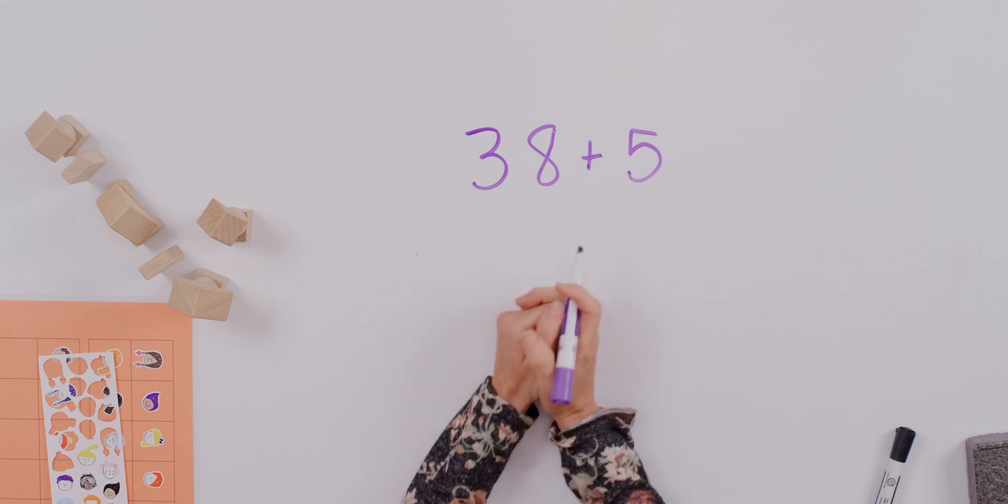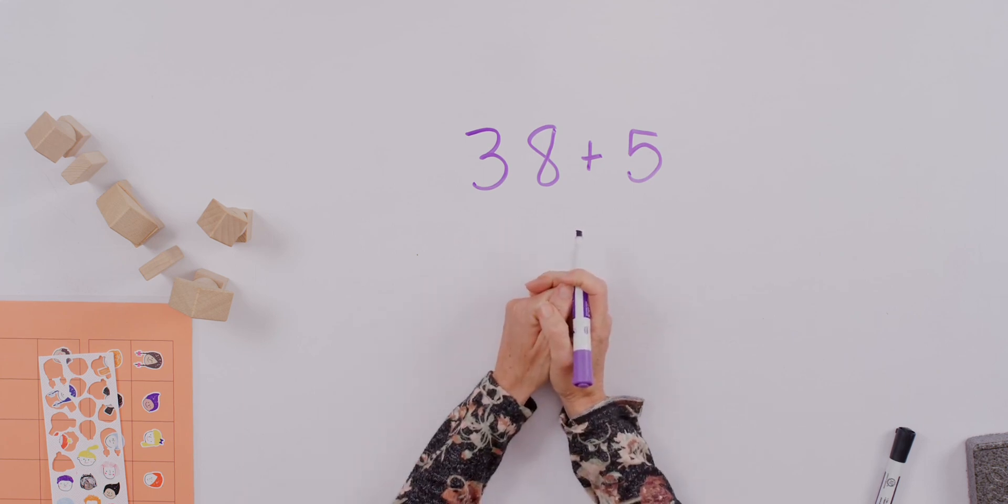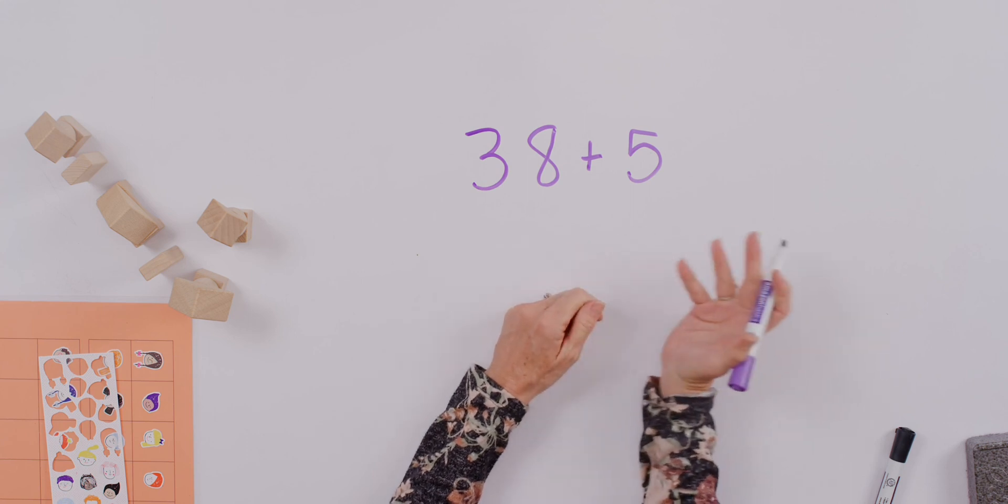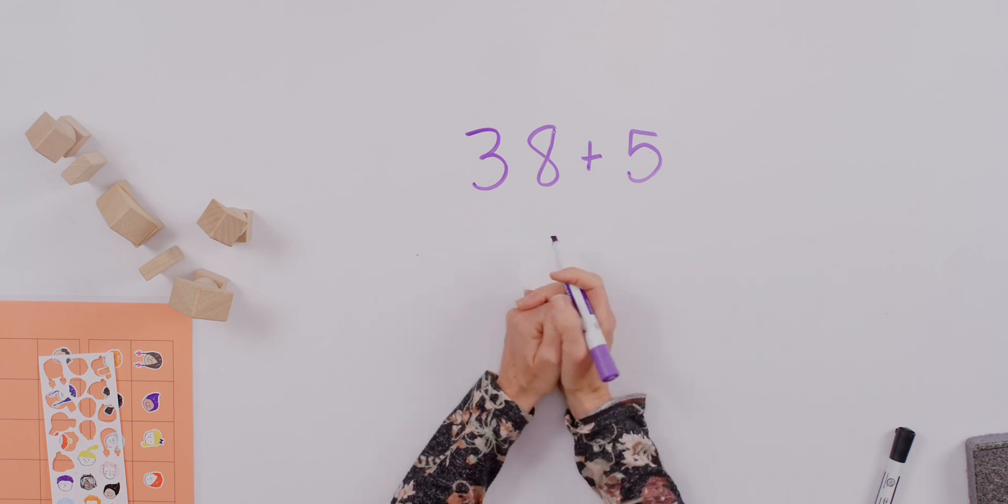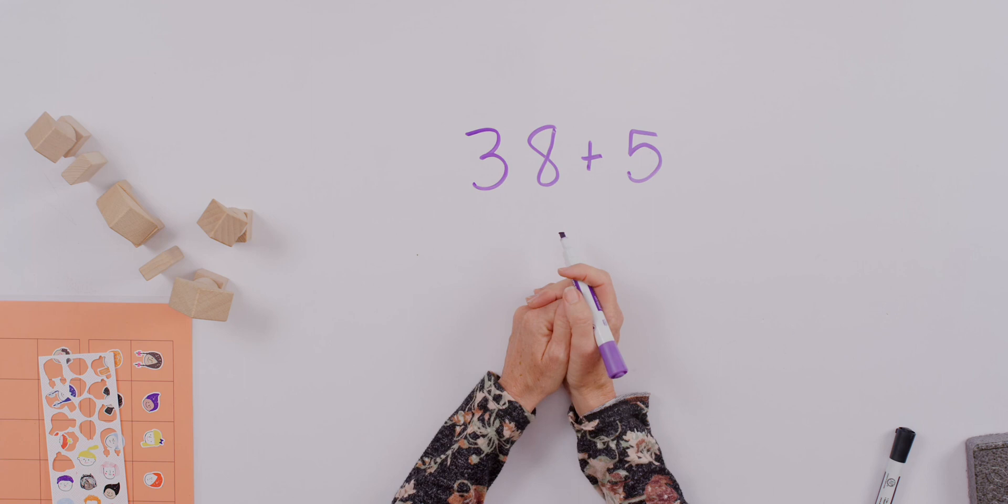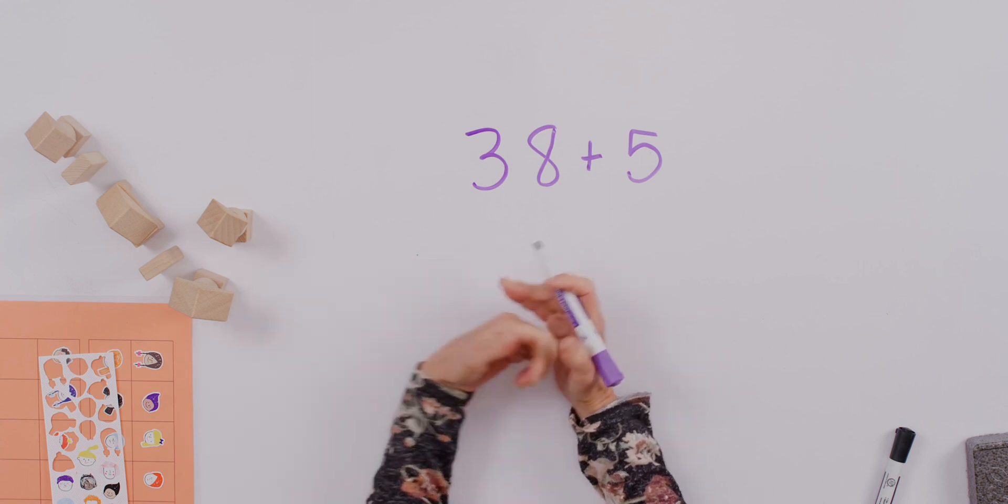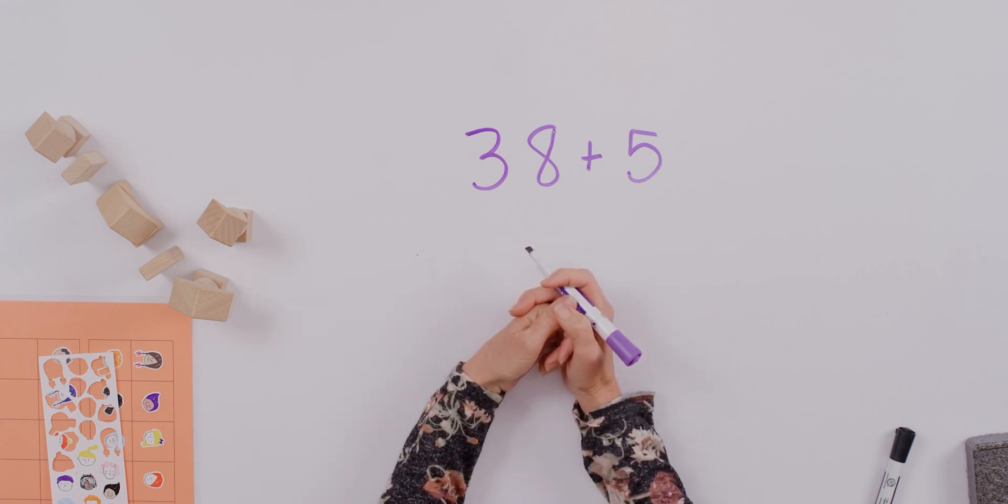Now, in your mind, you might already remember eight plus five equals thirteen. You can hold that and then add three tens to that. But if you can't remember that, we can go back to our idea of making a friendly number.